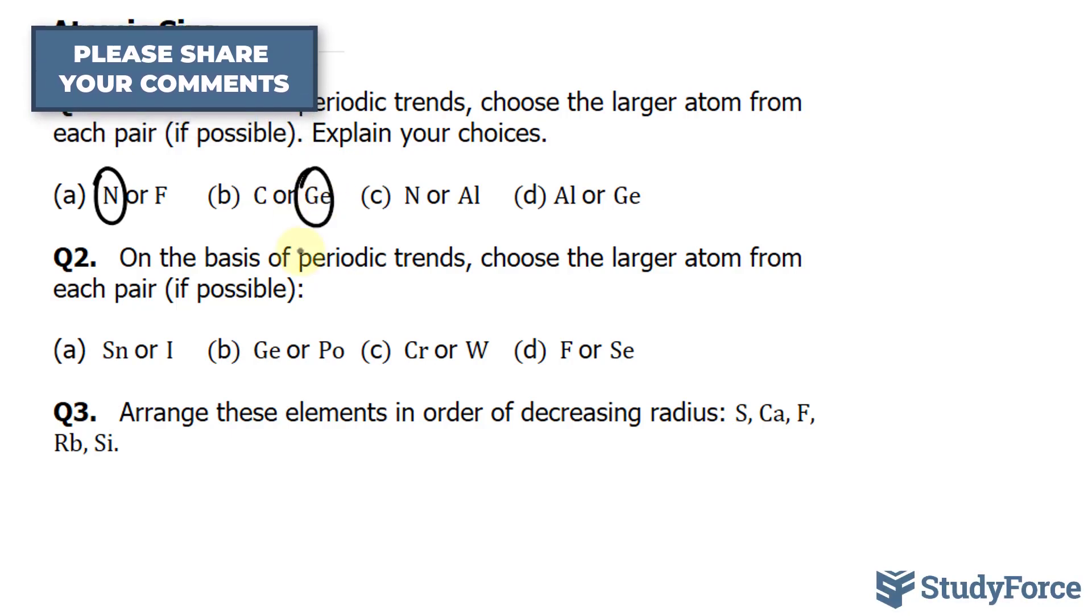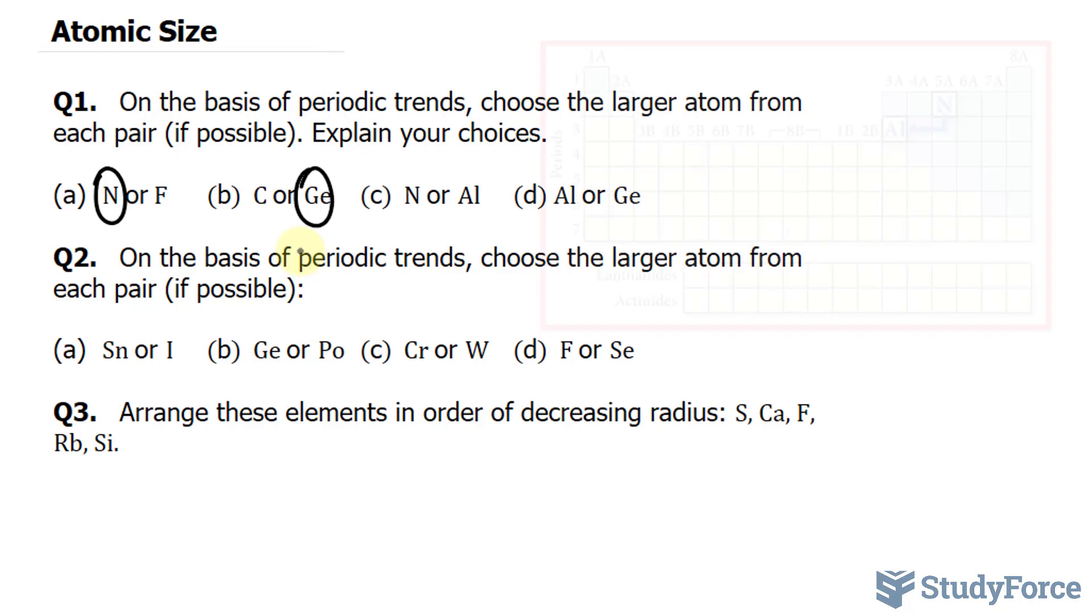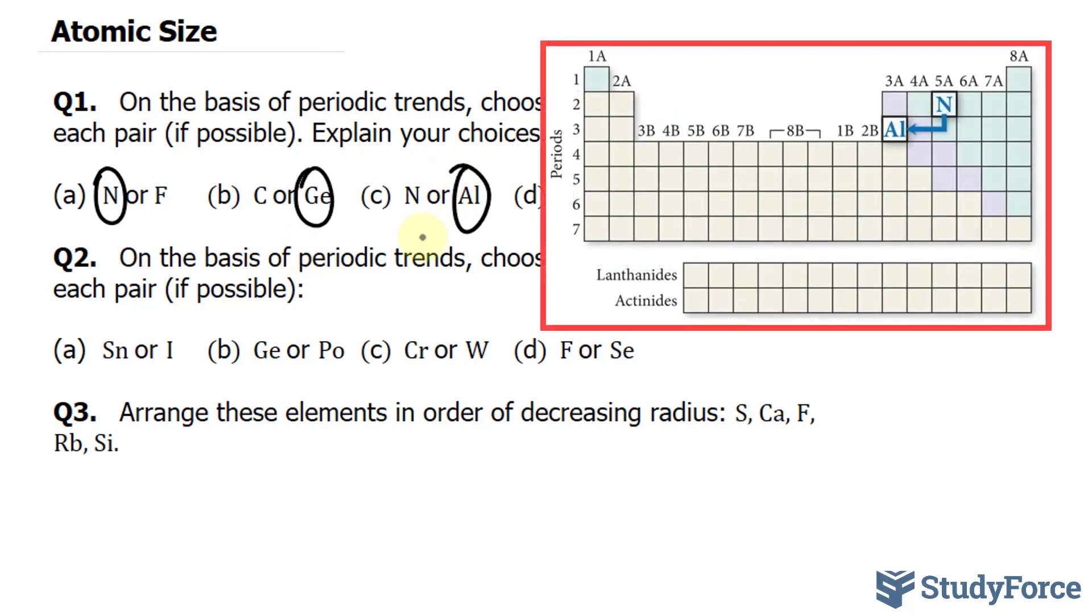In question C, we have nitrogen versus aluminum. Aluminum atoms are larger than nitrogen atoms because as you trace the path between nitrogen and aluminum on the periodic table, as shown, you move down a column, which increases the atomic size automatically. And then to the left across a row also increases the atomic size. These effects added together increase the overall size.